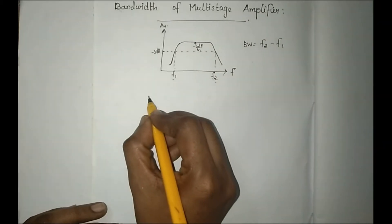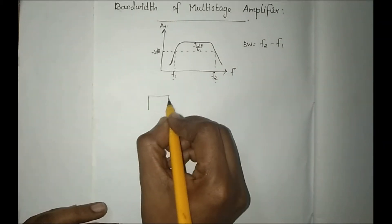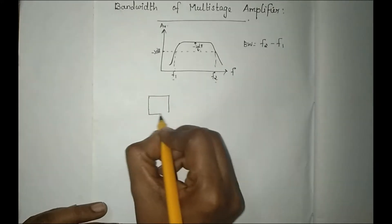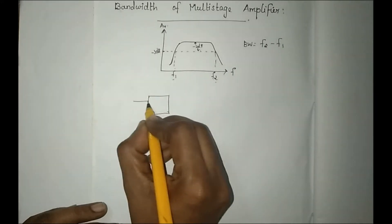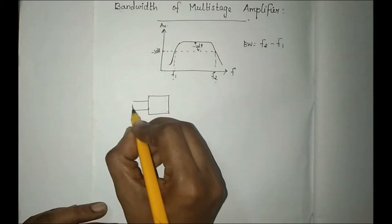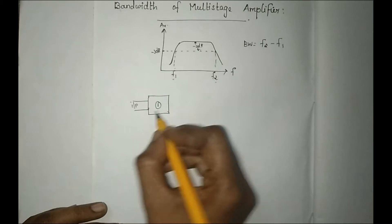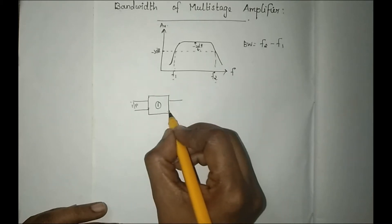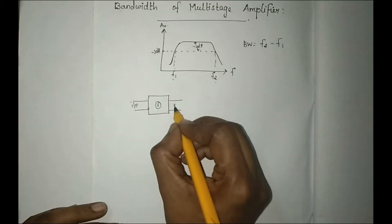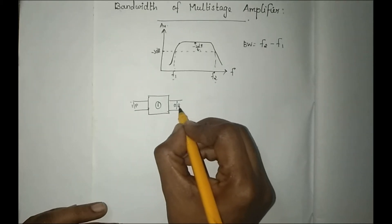So what is a multi-stage amplifier? A multi-stage amplifier has one transistor with an input. This is the first transistor — we provide an input and get an output.